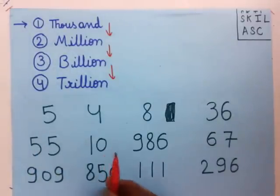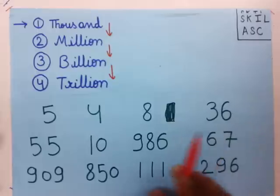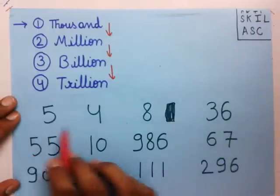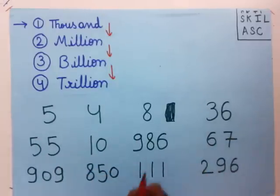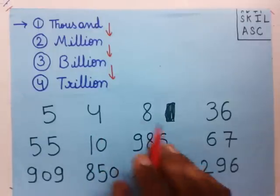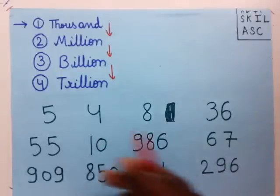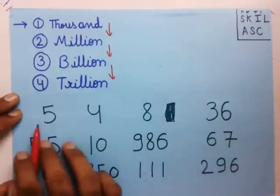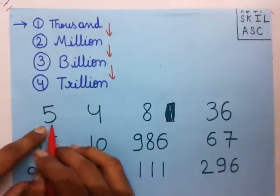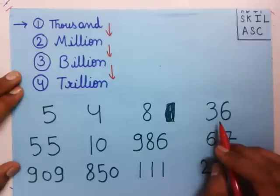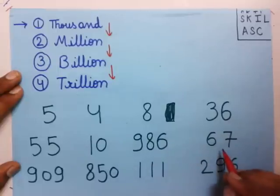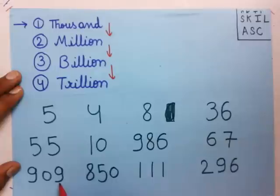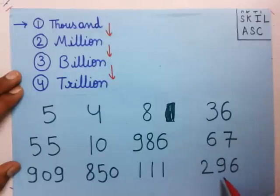The next step is to be able to read any number, we must know how to read small numbers. These are very small numbers which we all know how to read. You see how to read this number? This is 5, it is 4, it is 8, it is 36, it is 55, it is 10, it is 986, it is 67, it is 909, it is 850, it is 111, and it is 296.